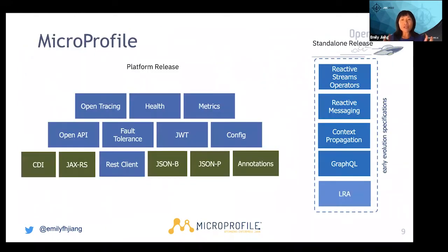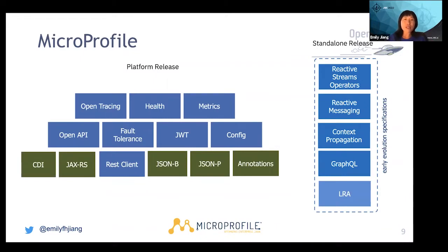In MicroProfile, the specifications can be put into two buckets: one is the platform release and one is the standalone release. In the platform release you can see eight specifications shown as blue squares. There are also reactive stream operators, reactive messaging, context propagation, GraphQL, and LRA — these are standalone releases that haven't yet emerged into the platform release. Over time, we analyze whether some standalone releases become core and can move to the platform release.